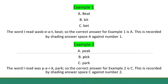Example 2. Park. The word I read was P-A-R-K, park. So the correct answer for example 2 is C. This is recorded by shading answer space C against number 2.